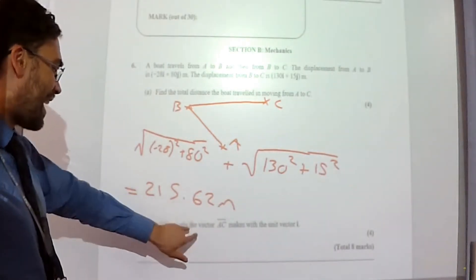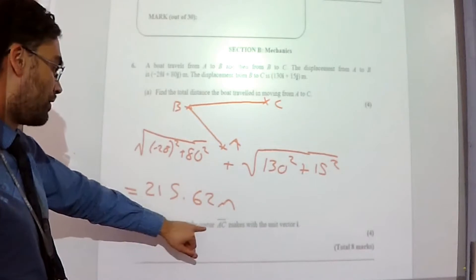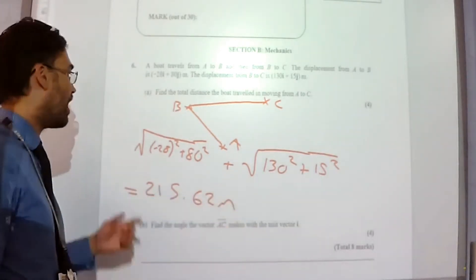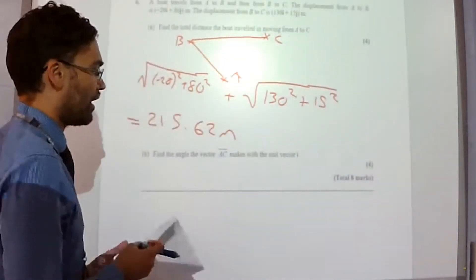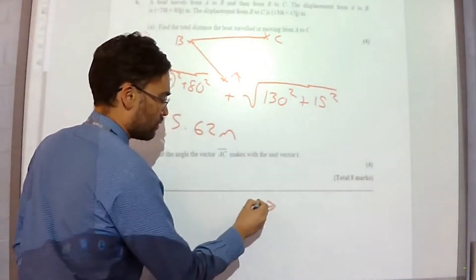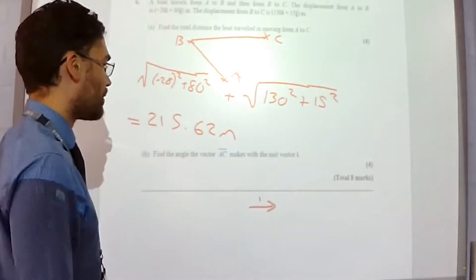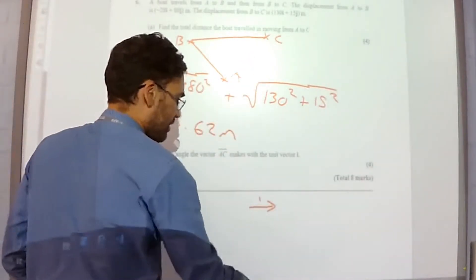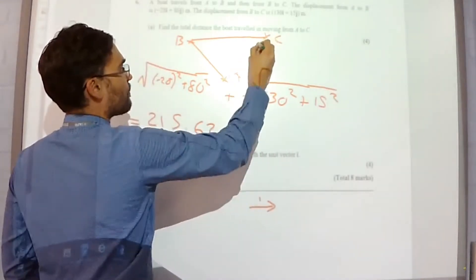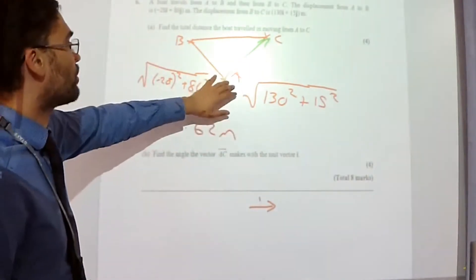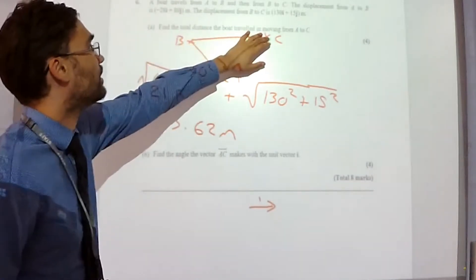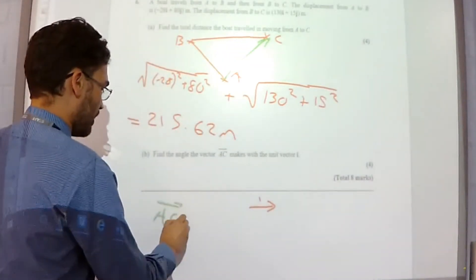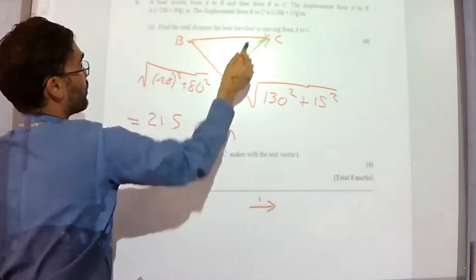Part B, find the angle of the vector AC makes with the unit vector I. So the unit vector I is one to the right, the angle A to C makes with that. So this vector here A to C is the result of A to B and B to C. So A to C is just going to be these two added together.